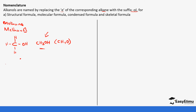The second alcohol is derived from ethane, so it becomes ethanol — two carbons. For the condensed formula, it's going to be CH₃, then CH₂, then OH.